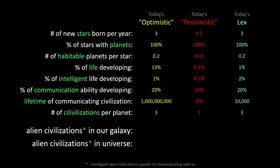Finally, the extra eighth parameter: the number of times a civilization is born on a planet, given the age of a planet. Some optimistic estimates think it's possible for intelligent civilizations to be reborn on a planet and put that value at three. The original Drake equation didn't include this parameter, so the pessimistic estimate is one. We then multiply all these together — treating percentages as fractions, so 13% is 0.13 — and the result is the estimated number of intelligent alien civilizations capable of communicating in our galaxy.